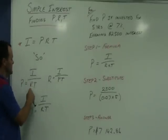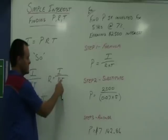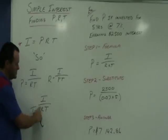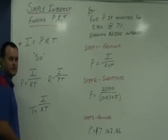To find the principle, it's the interest divided by the rate times the time. To find the rate, the interest divided by the principle times the time. And to find the time, it's the interest divided by the rate times the time.